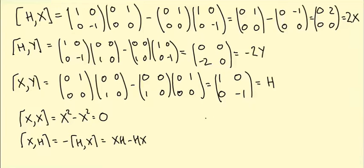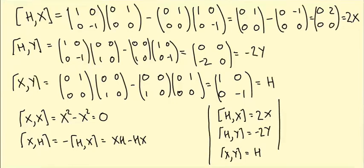So this example is of such fundamental importance that I'm going to put the equations I've just derived down here. So H bracket X equals 2X, H bracket Y equals minus 2Y, and X bracket Y equals H. This, we're going to use this all the time later in the course, this set of relations. So actually, this is one of the most important examples in the course.